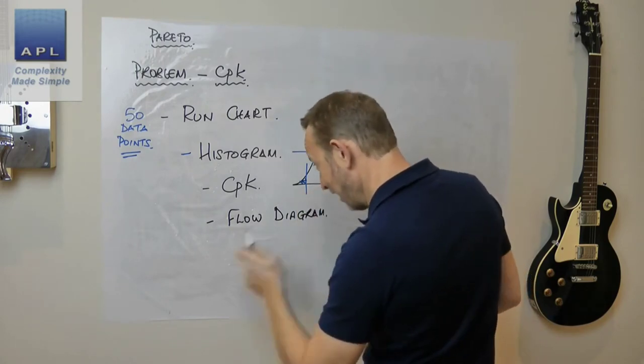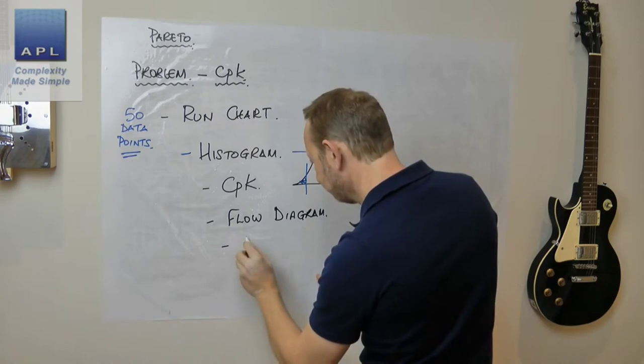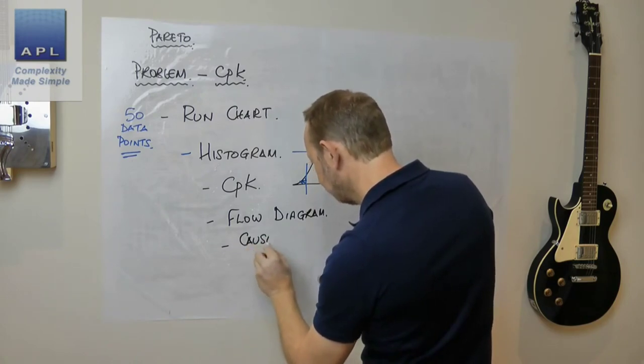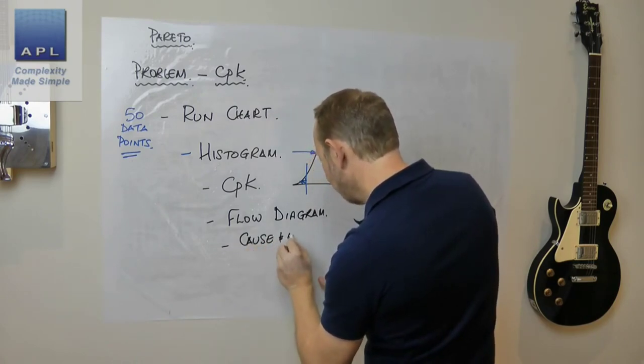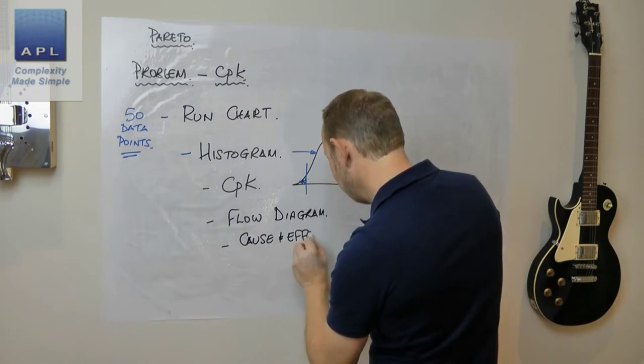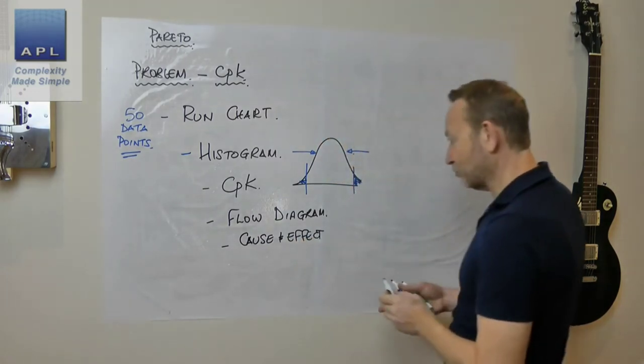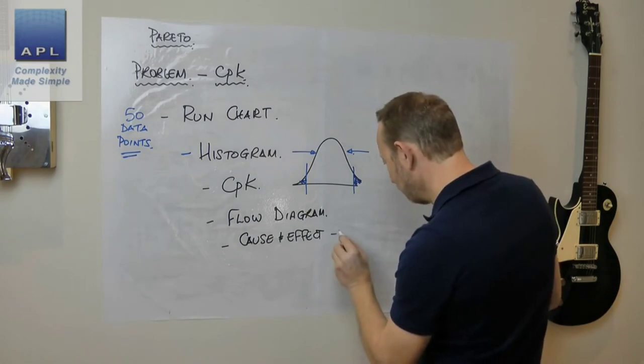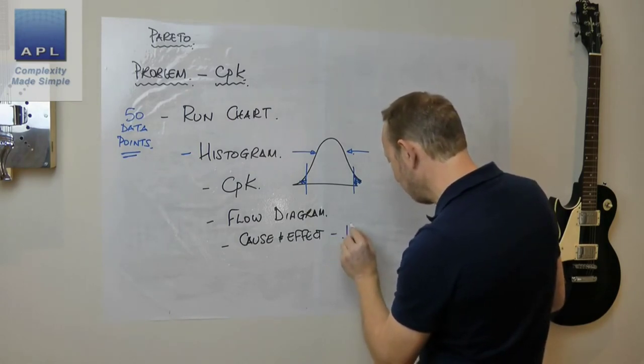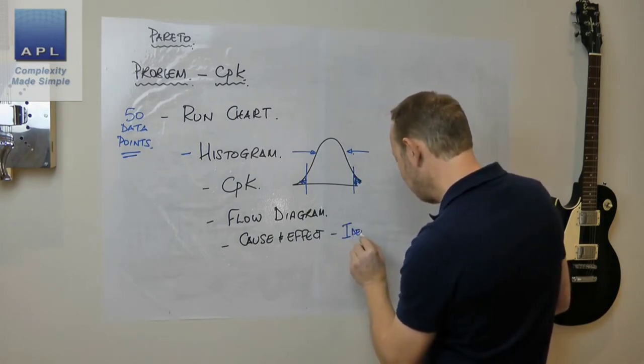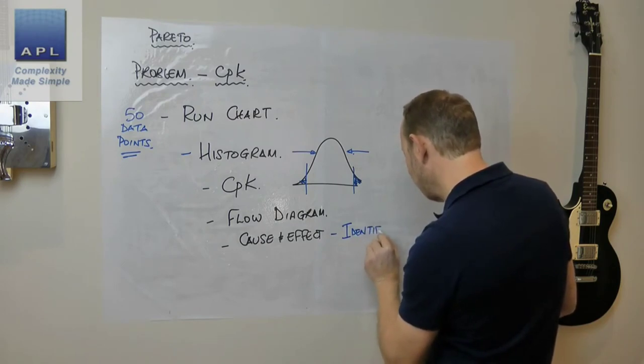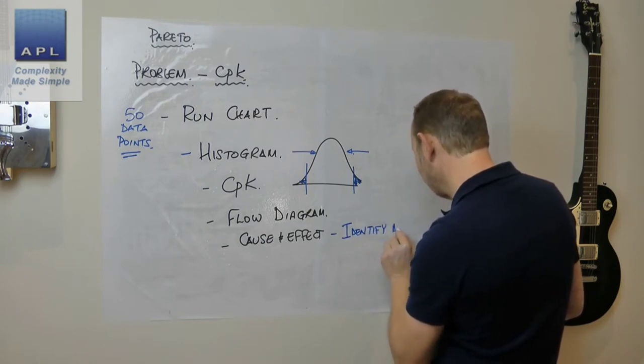The flow diagram helps me go through every step of the process. Then the cause and effect diagram - what's that going to find me? I'm going to identify all the input variables.